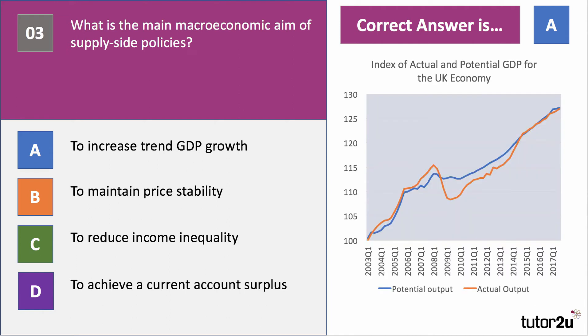Here's a chart showing actual GDP for the UK in orange — you can see the economic cycle there — and estimated potential GDP for the UK shown in blue. Effectively, that's the rate at which the long-run aggregate supply curve for a country shifts out.